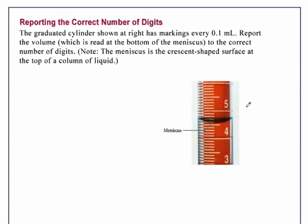Reporting the correct number of digits. The graduated cylinder shown at right has markings every 0.1 milliliter. Report the volume, which is read at the bottom of the meniscus, to the correct number of digits.